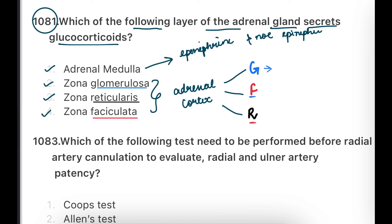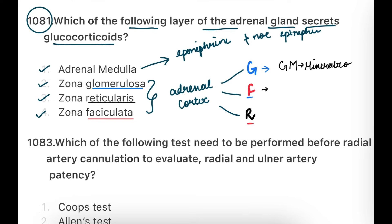From the trick: G stands for Glomerulosa, which secretes Mineralocorticoids. F stands for Fasciculata, which secretes Glucocorticoids. And Reticularis secretes all the Androgens.